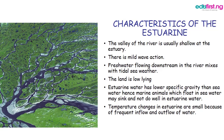Characteristics of an estuary: the valley of the river is usually shallow at the estuary. There is mild wave action. The freshwater flows downstream in the river and mixes with tidal sea water. The land is low-lying. Estuarine water has lower specific gravity than normal sea water, hence marine animals which float in sea water may sink and do not do well in estuarine water.